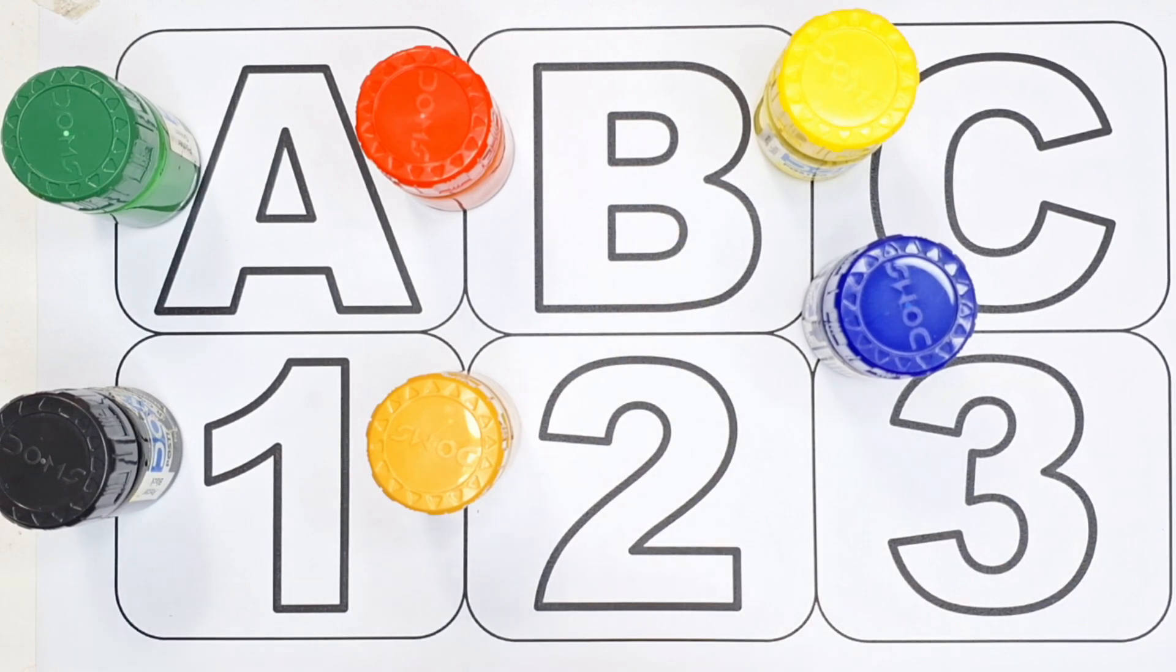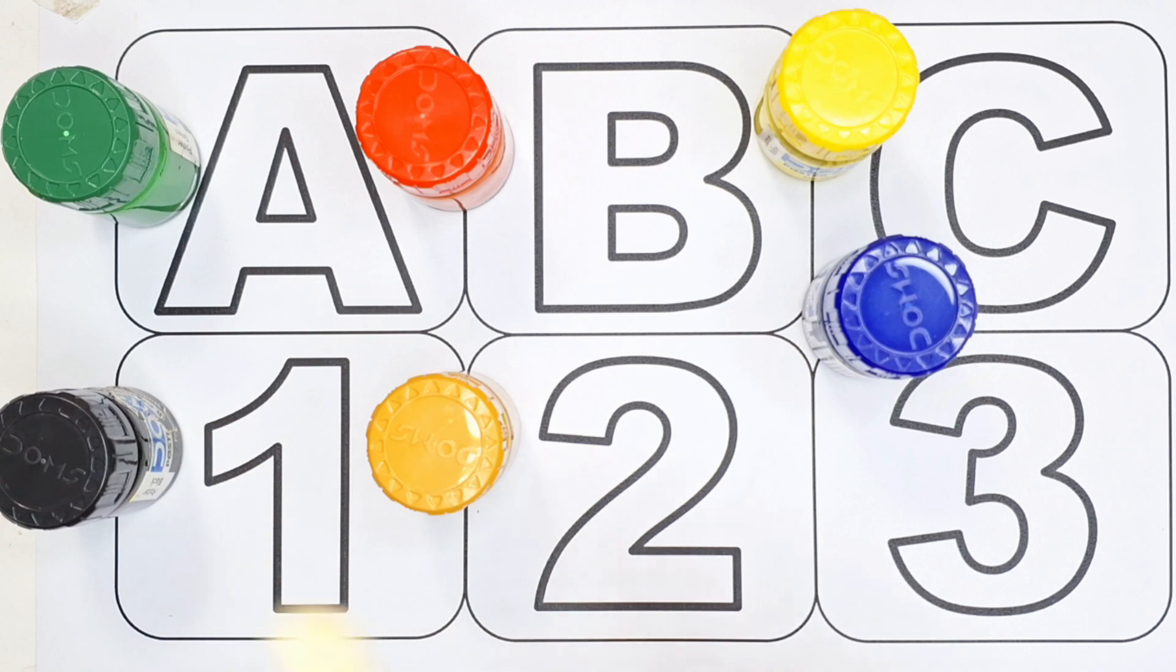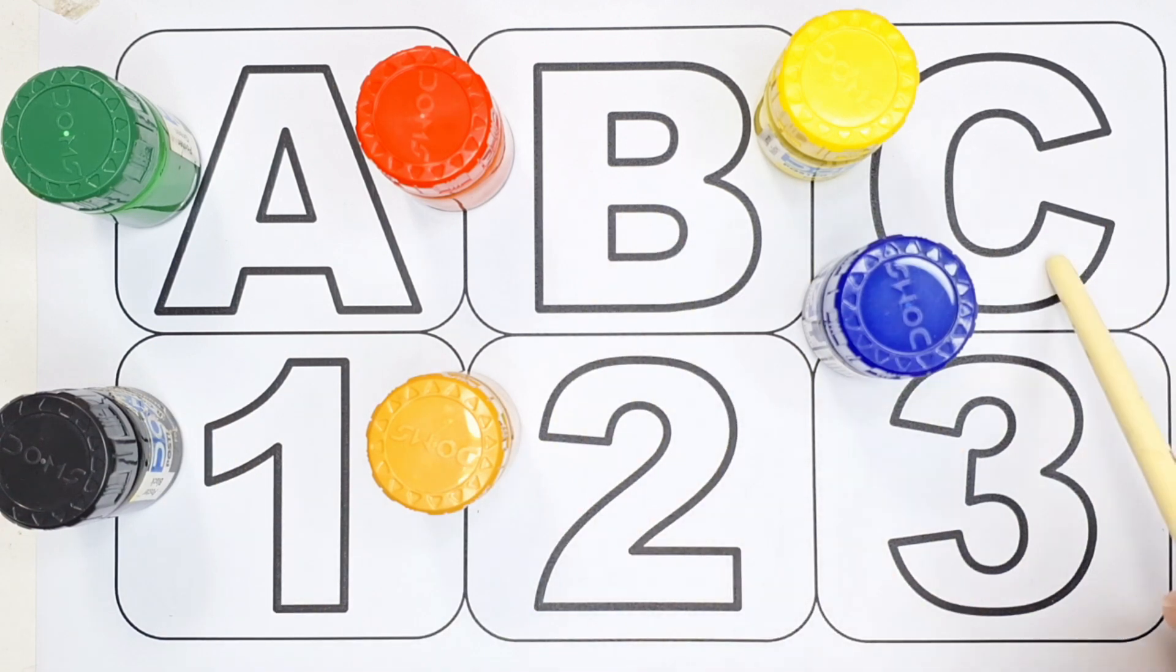Children, today we will learn alphabet letter A, B, C and numbers 1, number 2, number 3.